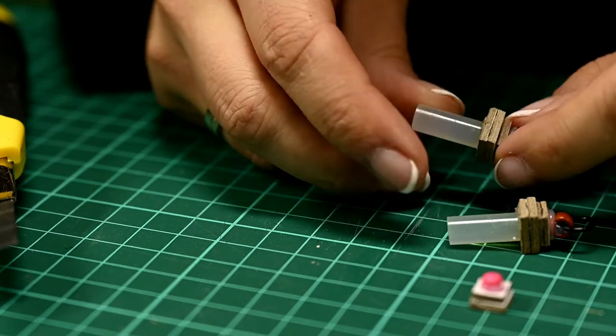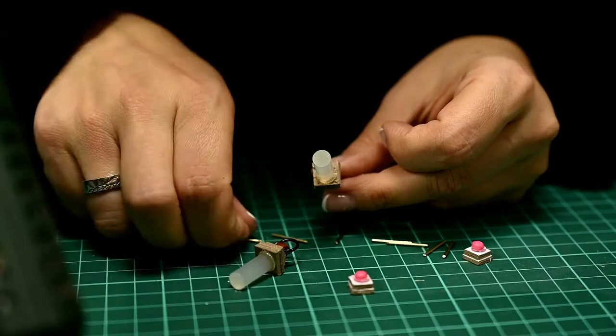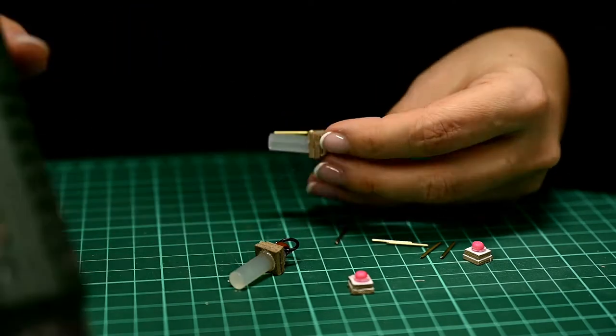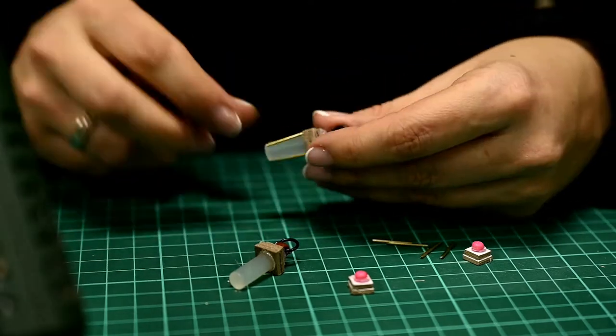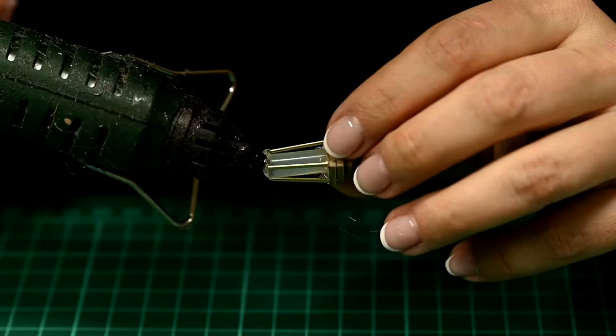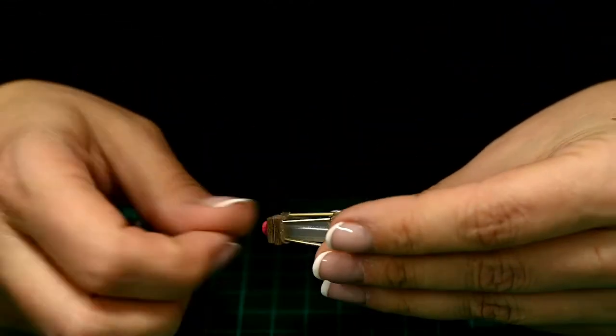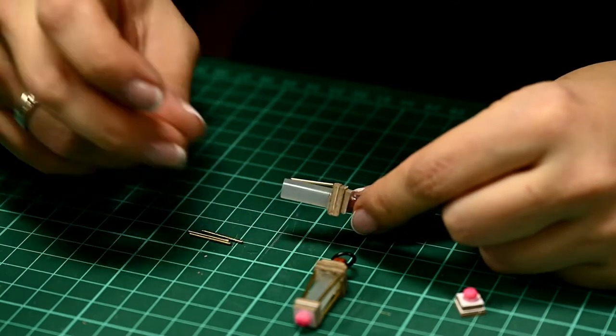I'm gluing the lantern tops first. Then I'm gluing the pieces of wire to the corners. These will be the lantern stands. I cut these wires from a paper clip and finally I'm gluing the lower part. The assembly may look quite complicated here.